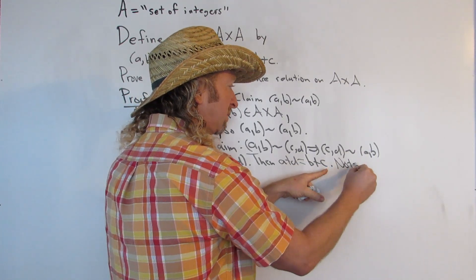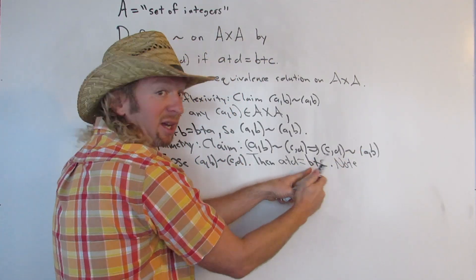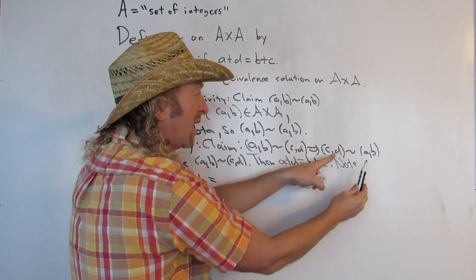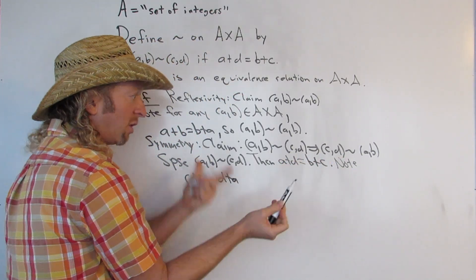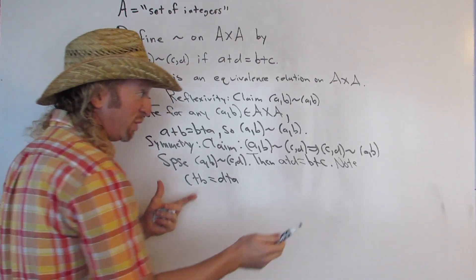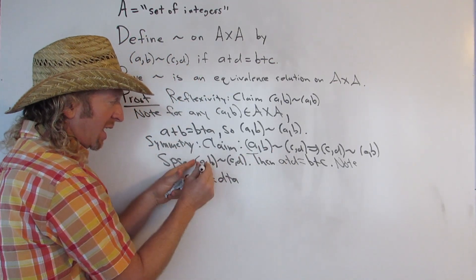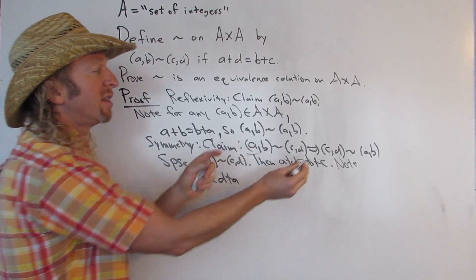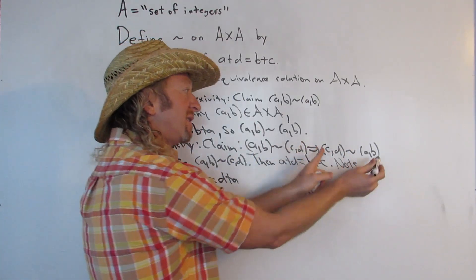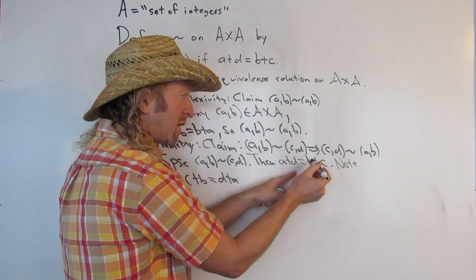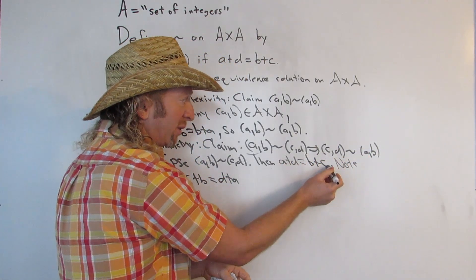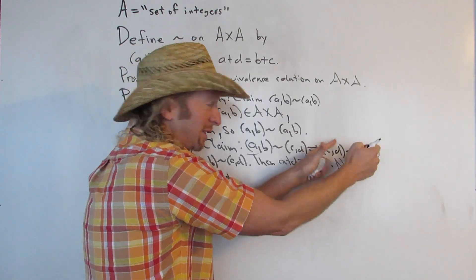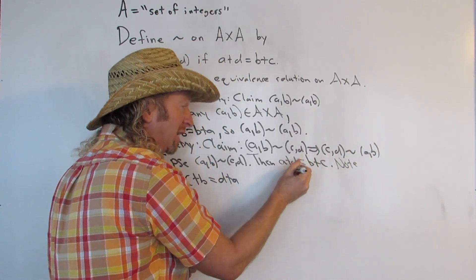Note: C plus B is the same as B plus C, which equals A plus D, which is the same as D plus A by commutativity of addition. So we already had it written down. C plus B equals D plus A. It works out beautifully.